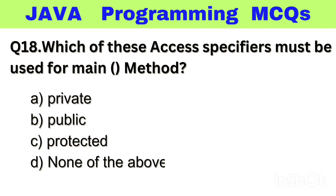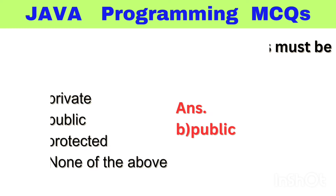Question number 18. Which of these access specifiers must be used for the main method? Option A: Private, B: Public, C: Protected, D: None of the above. The right answer is option B, Public.